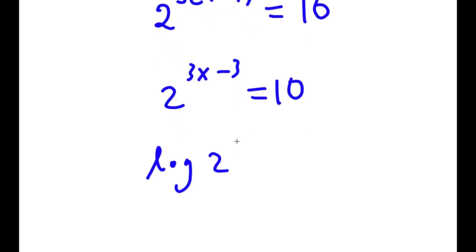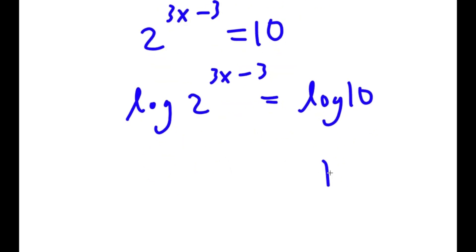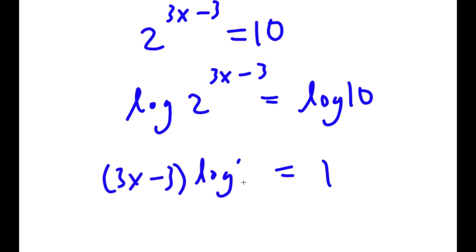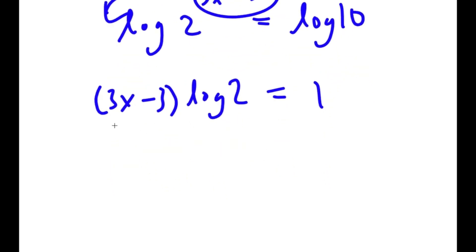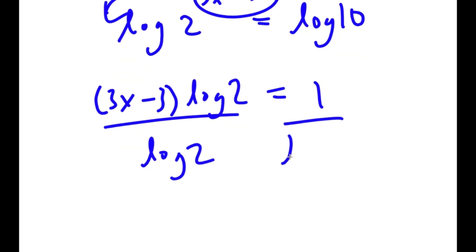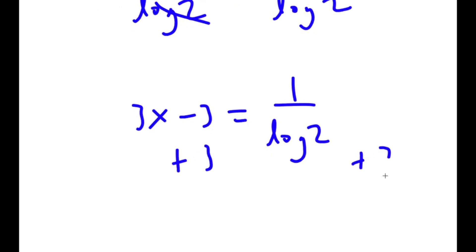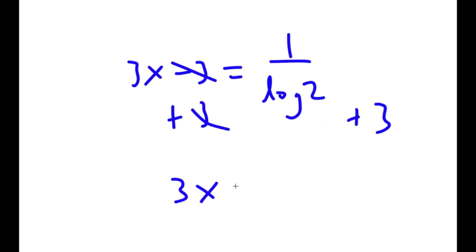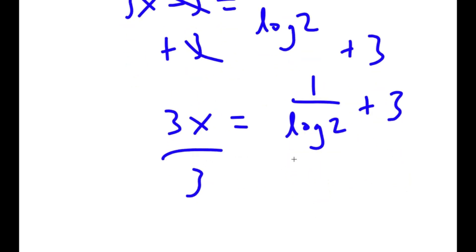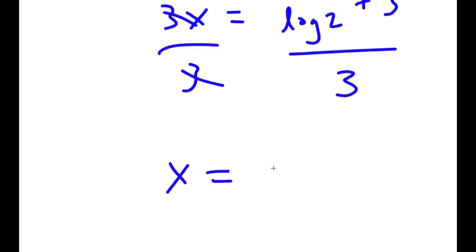Now I'm going to take the log on both sides, so I get log of 2 to the power of (3x minus 3) is equal to log 10. And log 10 equals 1, so I get 1 equals (3x minus 3) times log 2, because I can move the exponent to the front. Dividing both sides by log 2, I get 3x minus 3 equals 1 over log 2. Adding 3 on both sides gives 3x equals 1 over log 2 plus 3, and dividing by 3 gives x equals 1 over (3 log 2) plus 1.